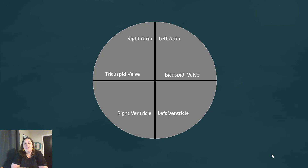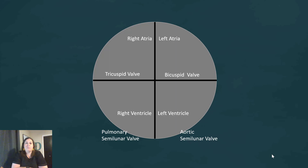The valve between the left atrium and the left ventricle is the bicuspid valve, also known as the mitral valve. A memory trick: 'try before you buy' — the tricuspid is on the right side, the bicuspid follows on the left. We also have semilunar valves that allow blood to leave the ventricles: the pulmonary semilunar valve allows blood to leave the right ventricle into pulmonary circulation, and the aortic semilunar valve allows blood to leave the left ventricle into the aorta for systemic circulation.